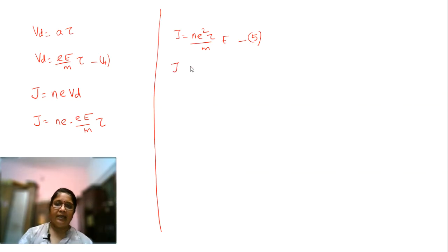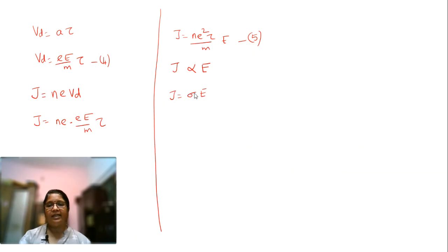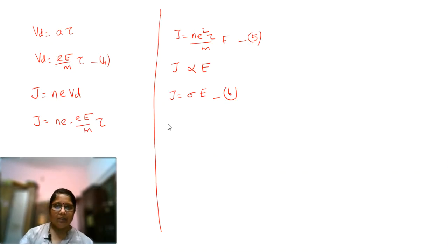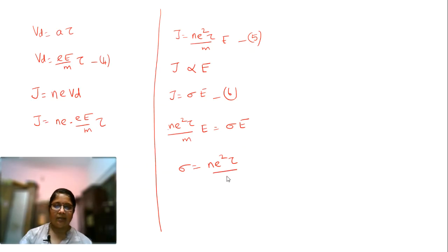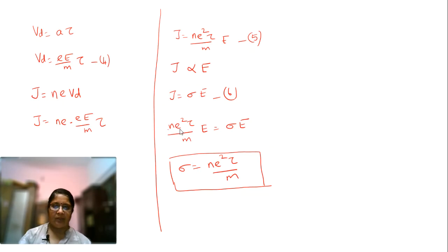Substituting into the current density expression: j is equal to n·e·(eE·tau/m), which gives j equals (ne²τ/m)·E. Since current density j is always proportional to the applied field E, we write j equals sigma times E, where sigma is the electrical conductivity. Equating these, sigma is equal to ne²τ divided by m. This is the electrical conductivity expression — equation 6.